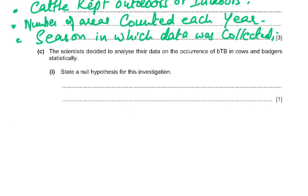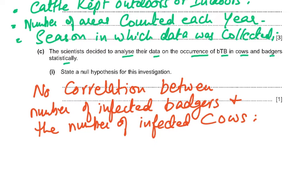Part C: the scientists decided to analyze the data on the occurrence of BTB in cows and badgers statistically — state a null hypothesis. A null hypothesis negates any relationship, so: there is no correlation between the number of infected badgers and the number of infected cows.